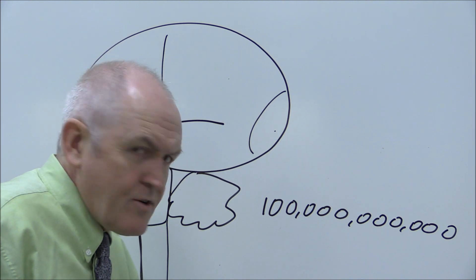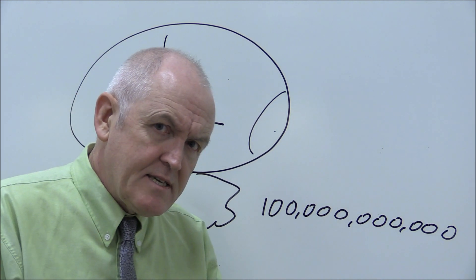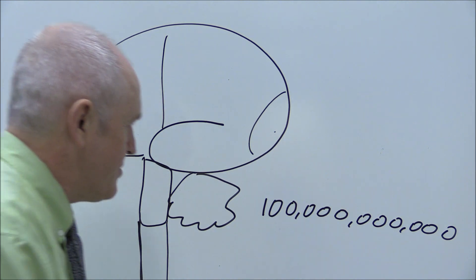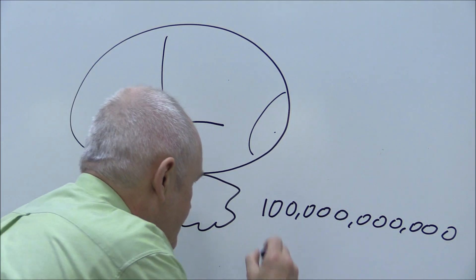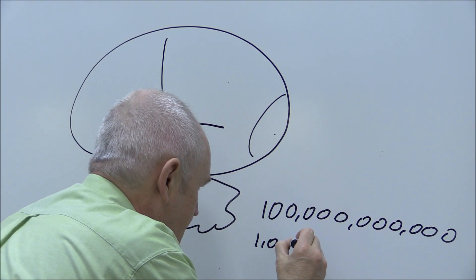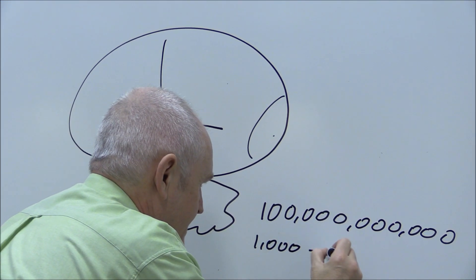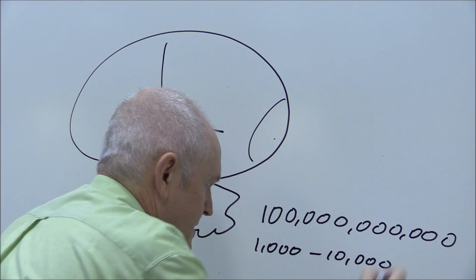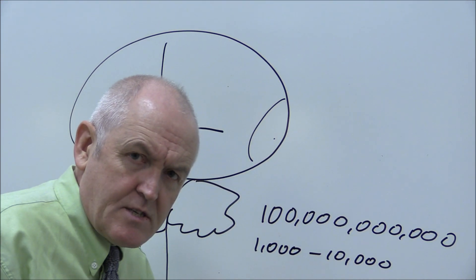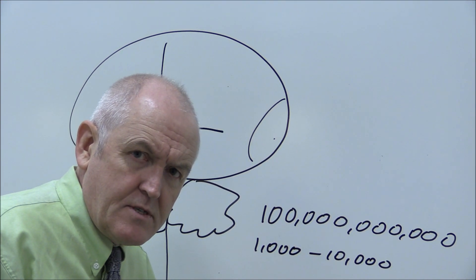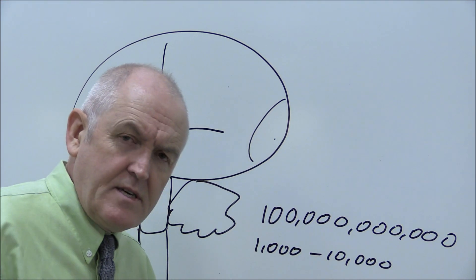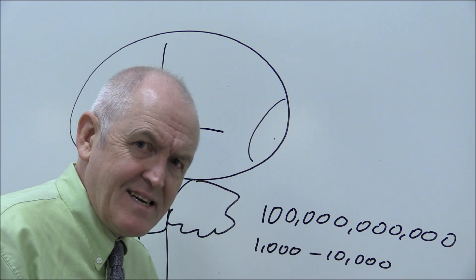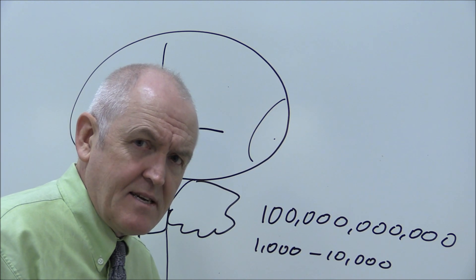These nerve cells are massively interconnected. Each individual neuron will make between one thousand and ten thousand synaptic interconnections with other neurons, giving individual neurons massive interconnectivity.